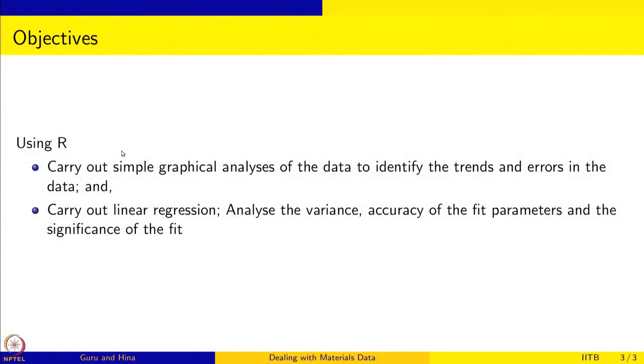The objectives of this module are rather straightforward. Using R, we want to carry out simple graphical analysis of data to identify trends and errors in the data. The second objective is to carry out linear regression, and in the process understand how to analyze the variance, how to look at the accuracy of the fit parameters, and how to say whether our fit is significant and how good it is.